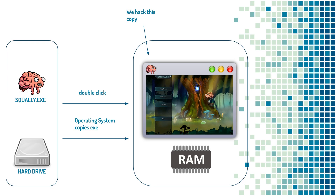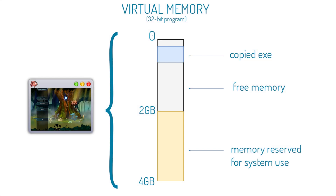Remember this diagram? This is what happens when an executable file is double-clicked. The operating system copies it from the hard drive into RAM, and then we start hacking the copy in RAM. When the program first runs, it's given its own set of virtual memory. One way to look at virtual memory is the limit of how much RAM a program can use. This is a slight simplification, but it's a sufficient way for us to think about it.